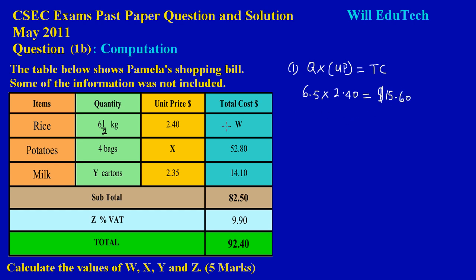Therefore, for W, we could say W is equal to $15.60. And that's our answer for W. Since it's a worded problem, you could say she paid a total of $15.60 for six and a half kilograms of rice. So that's part one. Let's move on quickly to part two.